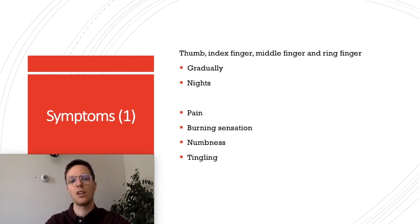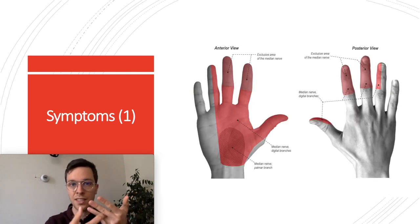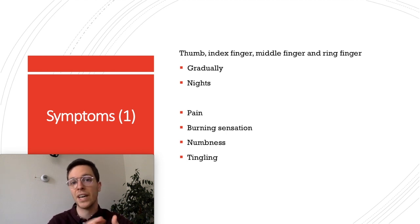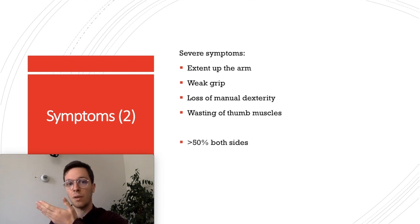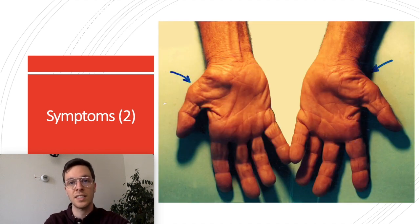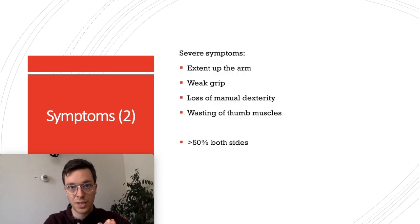This brings us to the symptoms. Long-term compression may lead to symptoms in your thumb, index finger, middle finger, and the radial side of your ring finger. The symptoms usually start during nighttime but gradually increase so you also have them during the day. You can have pain in these fingers as well as a burning sensation, numbness, and tingling. In more severe cases the pain and tingling may extend up to your arm. You can also have a weakened grip because the thenar muscles are innervated by the median nerve, a loss of manual dexterity, and wasting of your thumb muscles, which is visible at the base of your thumb. In more than 50% of all cases, people experience those symptoms in both hands.